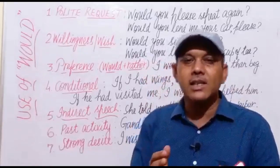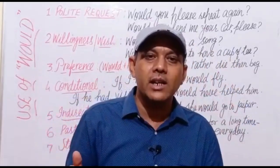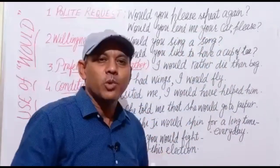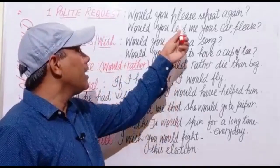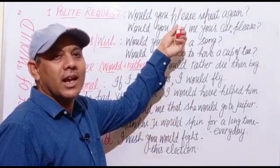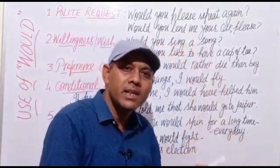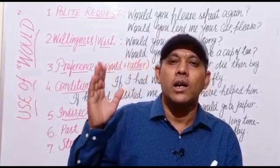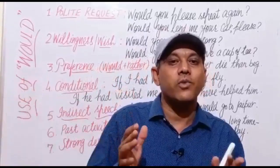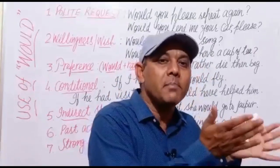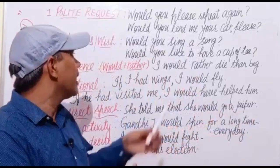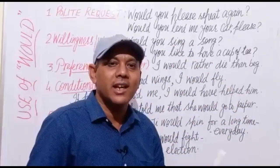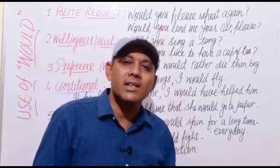For example: would you please repeat again? A teacher has been speaking and we couldn't follow, so we say: would you please repeat again? We are making a polite request. Next example: would you lend me your car please? If I have to go to hospital urgently, I would make a polite request to the owner of the car and say: would you lend me your car please? In this way, to make a polite request, we use would.